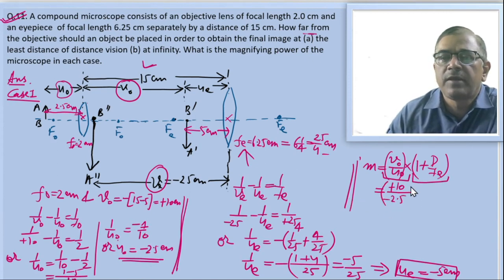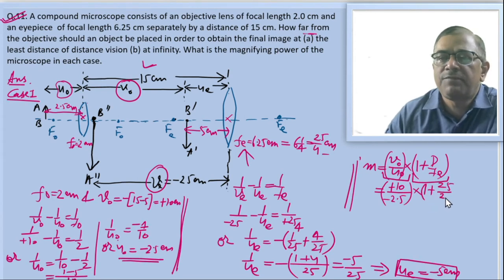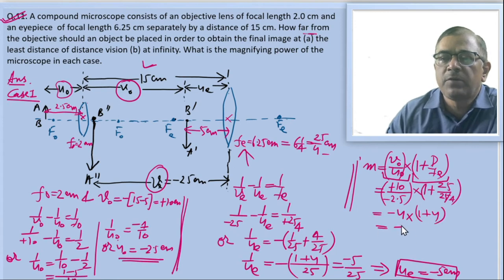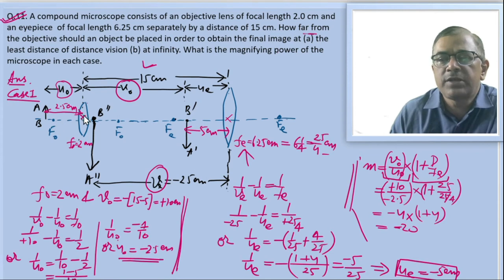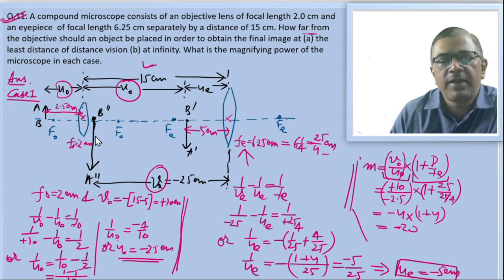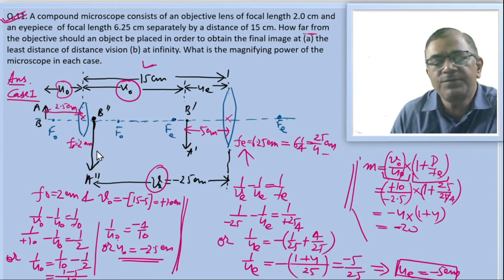Substituting all values with sign convention: m equals (10 divided by minus 2.5) multiplied by (1 plus 25 divided by 25 by 4). This gives minus 4 multiplied by (1 plus 4), which equals minus 4 multiplied by 5, so magnification equals minus 20. The negative sign indicates the final image is inverted with respect to the object, and 20 tells us the final image is 20 times bigger in angular size than the object placed at the least distance of distinct vision.